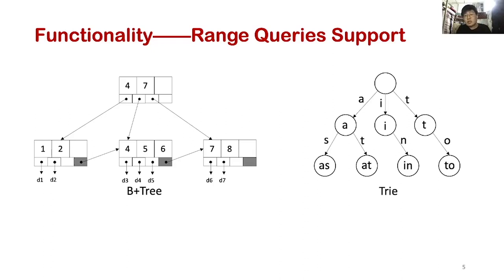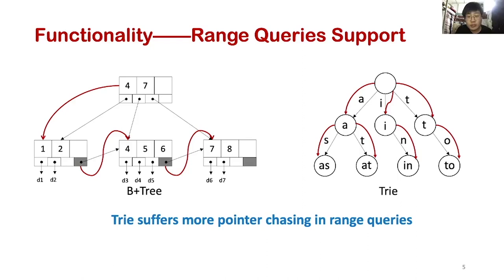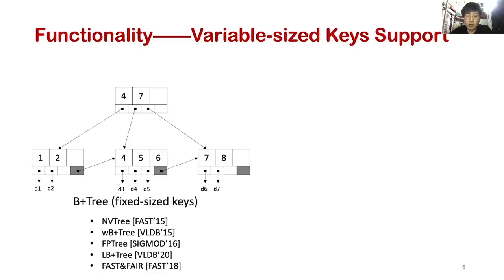For range queries, we analyze two tree-based indexes: B+ tree and trie. If we need to traverse all data in the tree, B+ tree needs less pointer chasing. Leaf nodes in B+ tree have sibling pointers to connect to the next leaf node. On the contrary, trie suffers more pointer chasing because range queries traverse different levels of the trie.